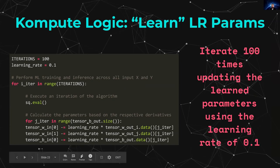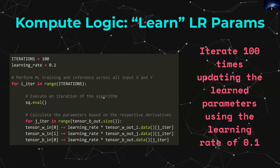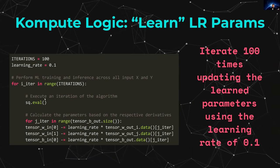Finally, we iterate 100 times. Each iteration runs the sequence — which contains all the recorded operations — and then updates all of the weights by the specific learning rate, which controls how fast the parameters are updated on each iteration. The key thing is to see all the features available in Kompute, using a simple machine learning use case as an illustrative example.